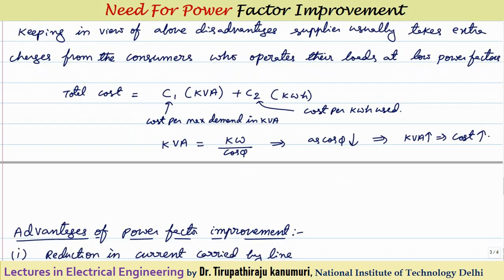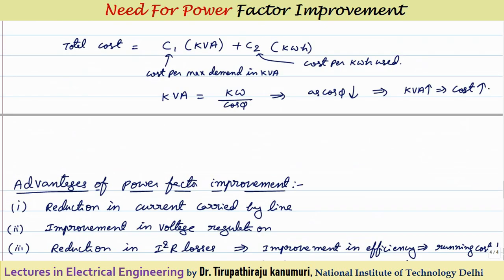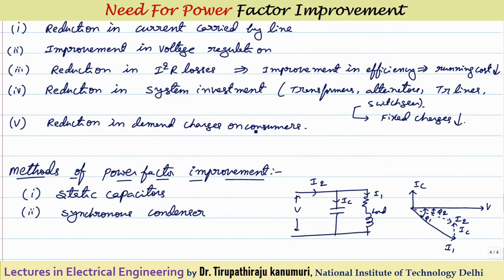Industrial consumers therefore install local setups to improve power factor. The advantages of improving power factor are: reduction in current carried by the transmission line, improvement in voltage regulation, reduction in I²R losses leading to improvement in efficiency and lower running costs, reduction in system investment since smaller transformers, alternators, transmission lines, and switchgear are needed, and reduction in demand charges since the C1 × KVA term decreases when cos phi increases toward unity.